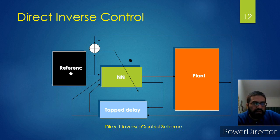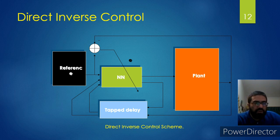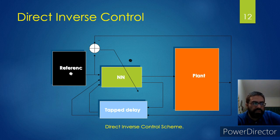This is the model of the direct inverse controller. You can see we have a plant, and we are feeding the output of the neural network into the plant. The output of the neural network goes into the tap delay line, and the output of the plant also goes into the tap delay line. The tap delay line feeds the neural network. We are also giving the reference signal to the neural network, and the difference between the reference signal and the plant output is also fed into the neural network in order to train it.